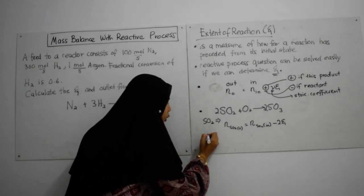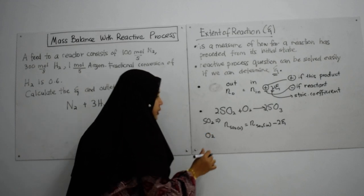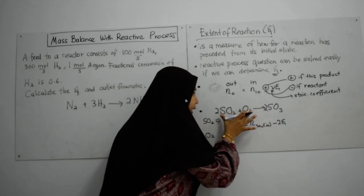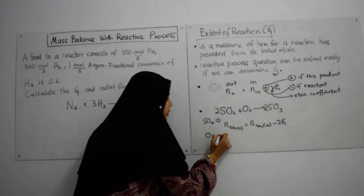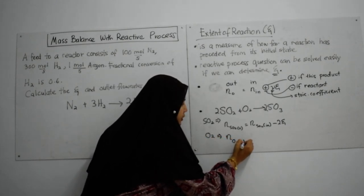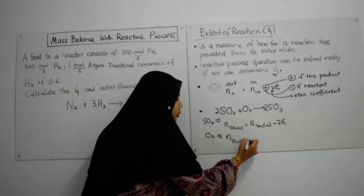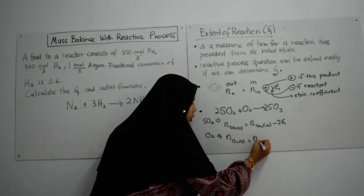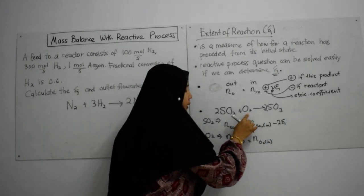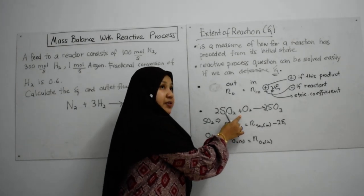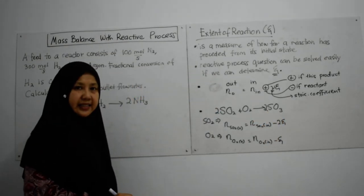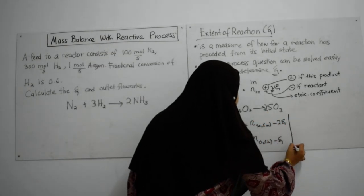Now, we use O2. Remember that we have to write the equation for each of the compounds in our equation. For O2 is n O2 out equals to n O2 in. This is a reactant, so minus extent of reaction.